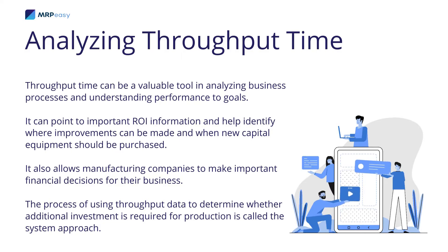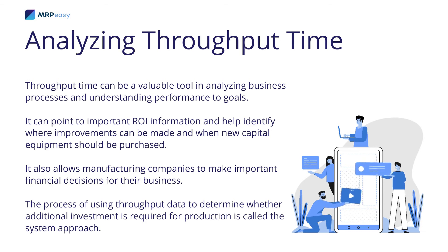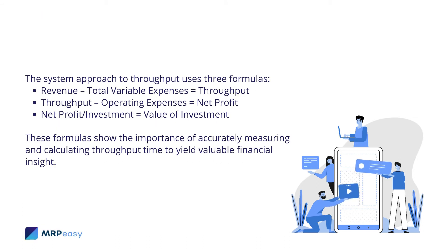Throughput time can be a valuable tool in analyzing business processes and understanding performance to goals. It can point to important ROI information and help identify where improvements can be made and when new capital equipment should be purchased, allowing manufacturing companies to make important financial decisions. The process of using throughput data to determine whether additional investment is required is called the system approach, which uses three formulas: Revenue minus total variable expenses equals throughput; throughput minus operating expenses equals net profit; and net profit divided by investment equals value of investment.